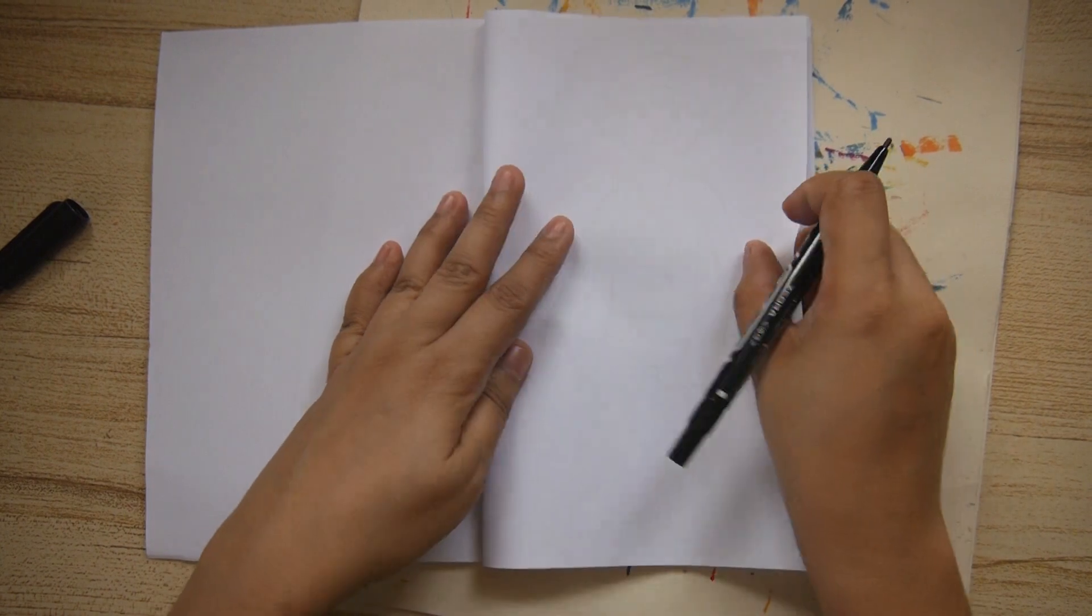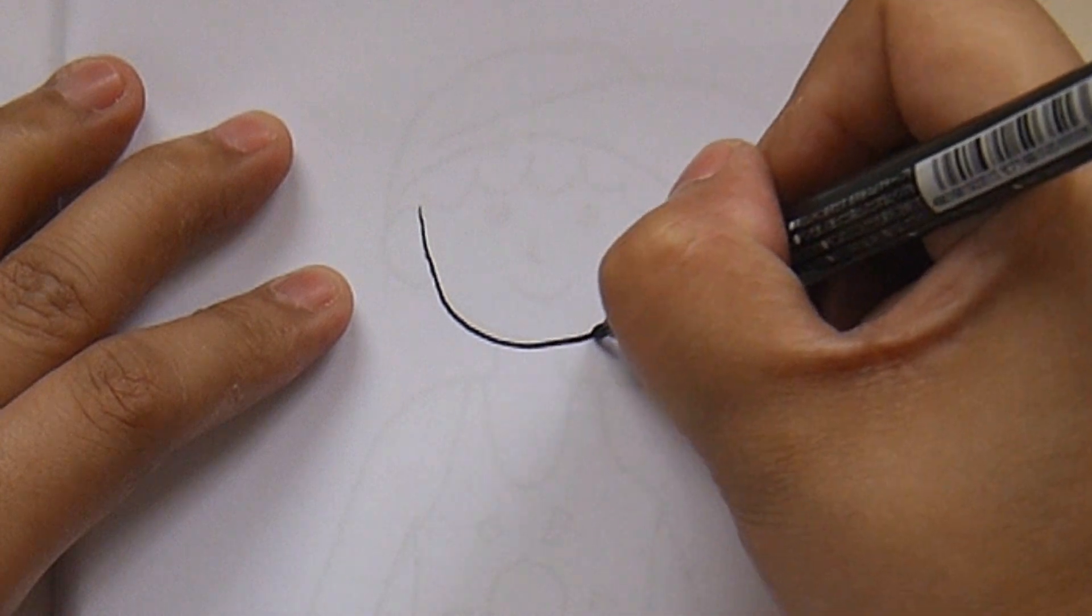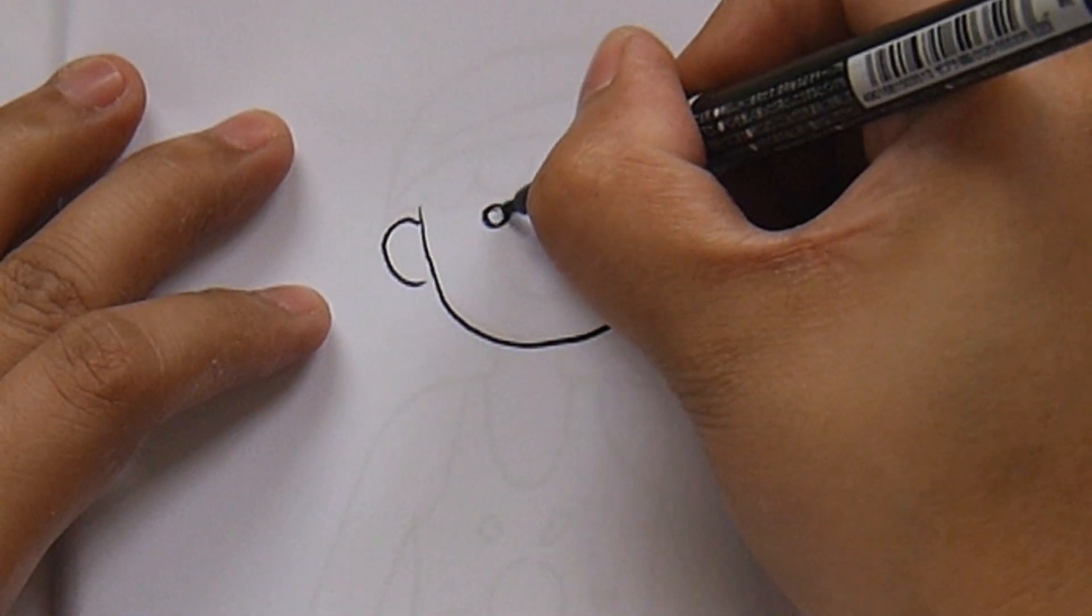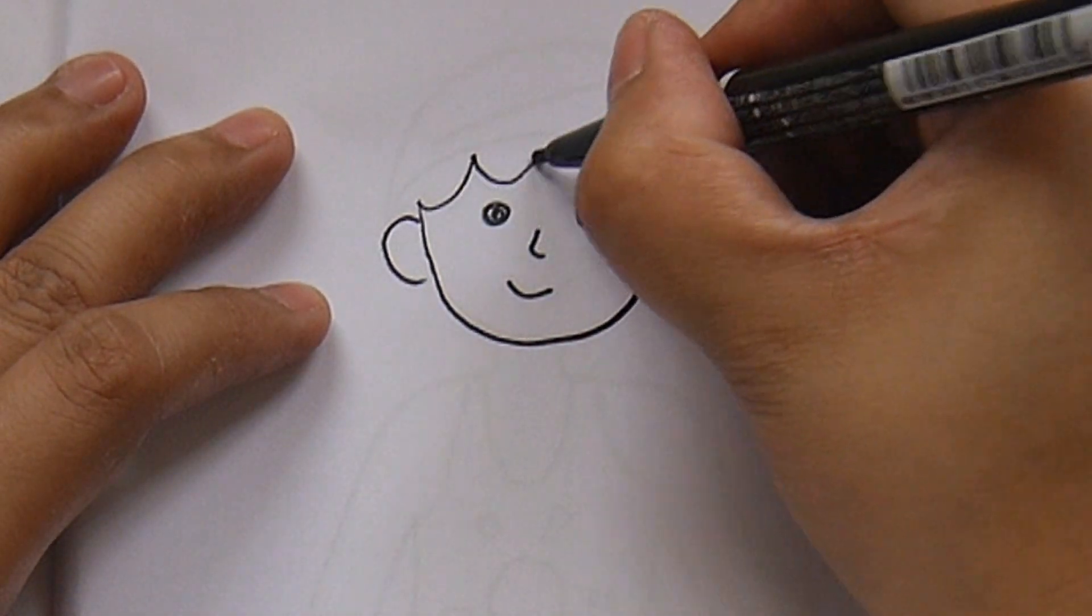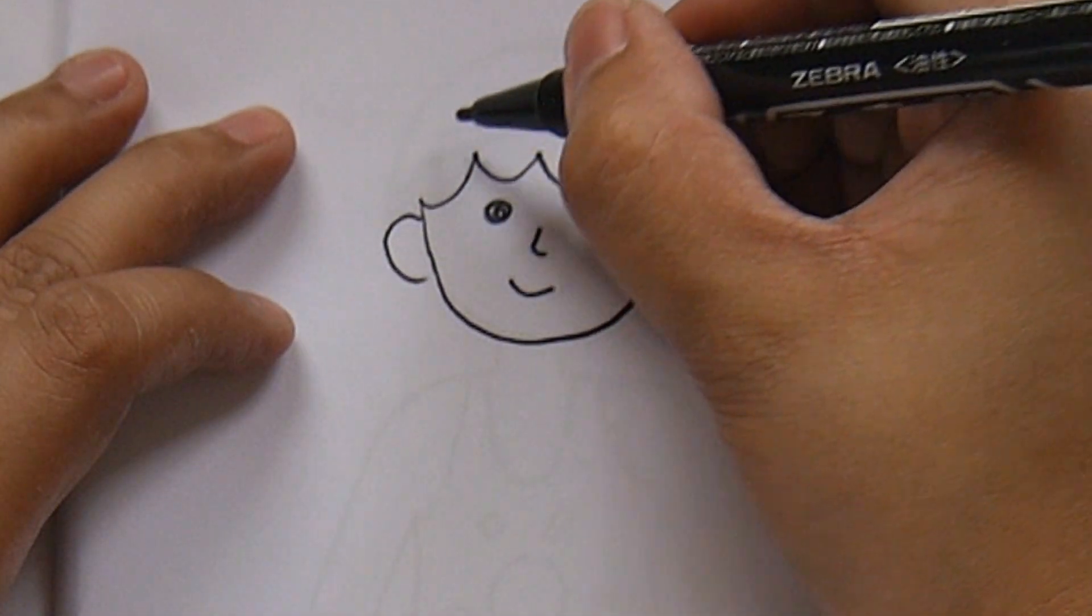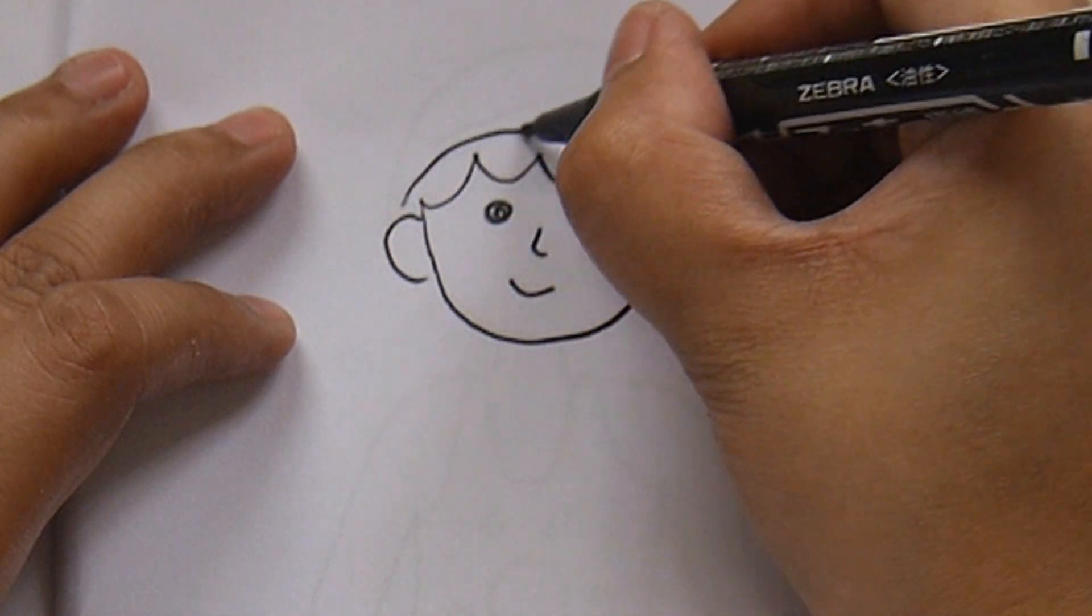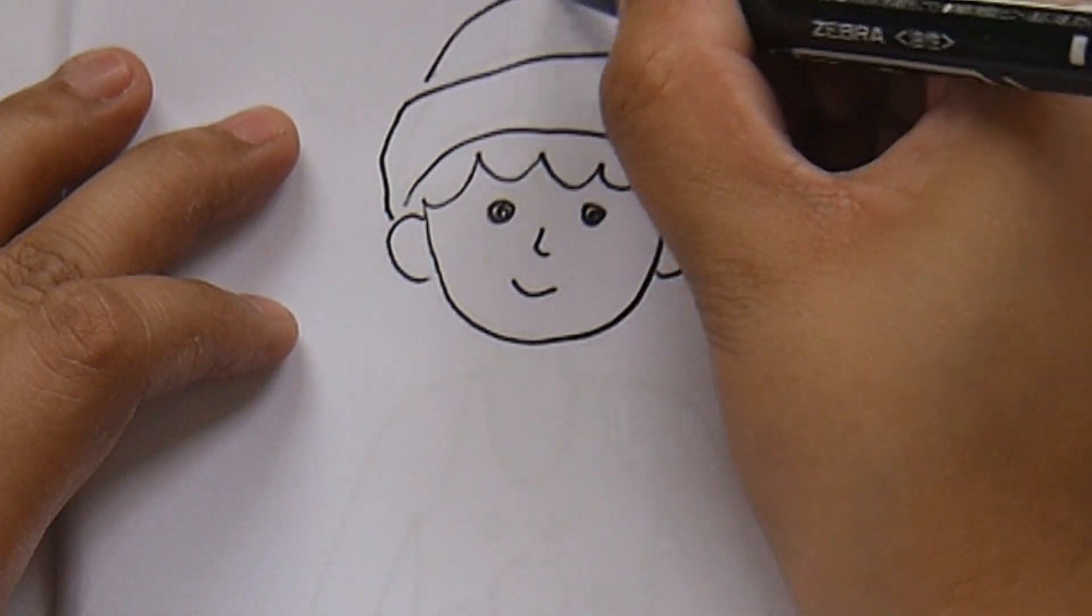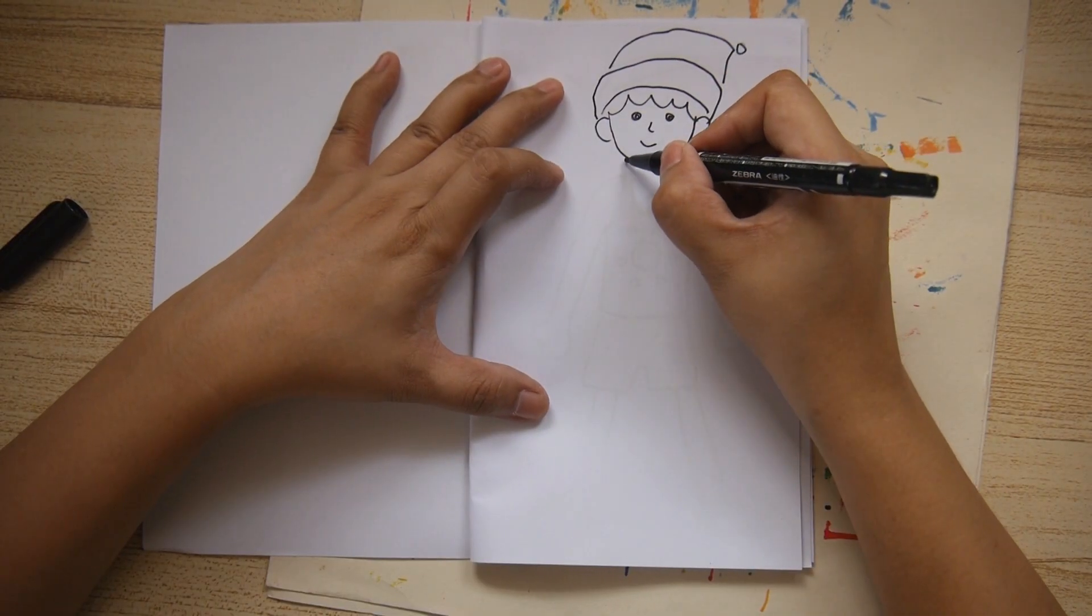Do the exact same process of tracing the image of the boy from the other page. Can you guess what I'm planning to do this time? That's right. He's going to be an elf this time.